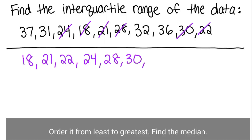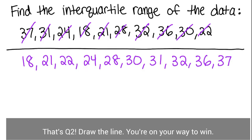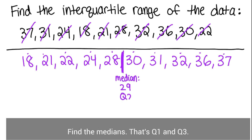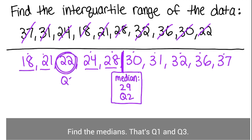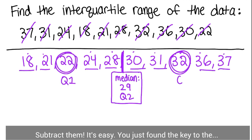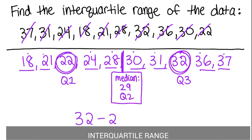Order it from least to greatest, find the median — that's Q2. Draw the line, you're on your way to win. Find the medians, that's Q1 and Q3. Subtract them, it's easy. You just found the key to the interquartile range.